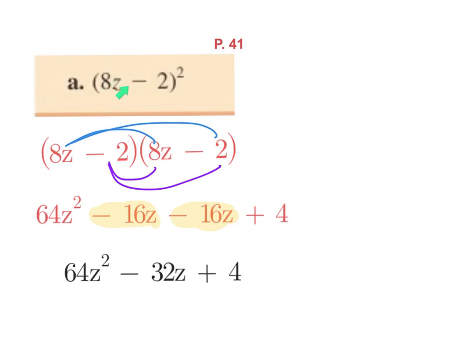This one squared is the first term. This one squared is the last term. The middle term is multiply them together then times two. So 8z times negative two which is negative 16z. Multiply that by two and you get negative 32z.